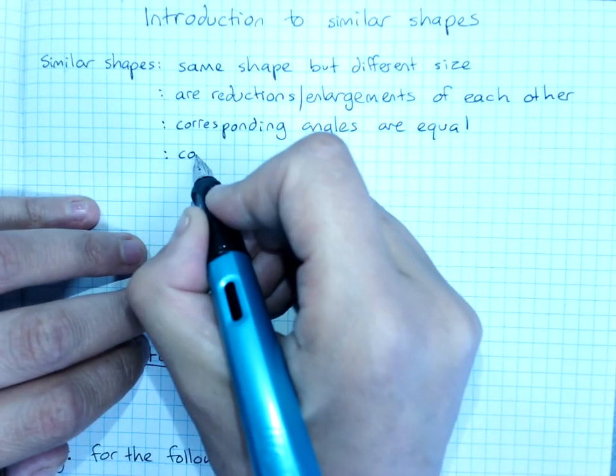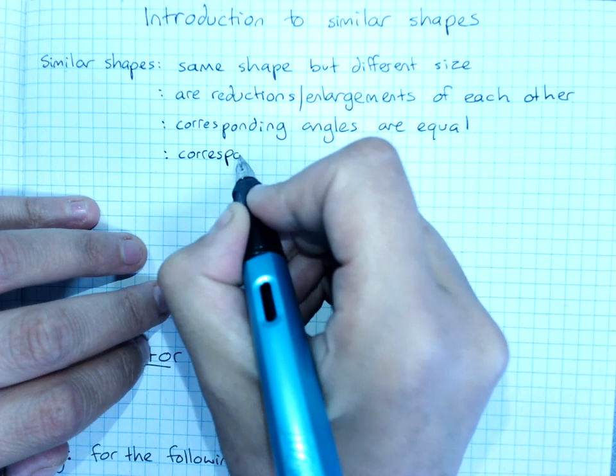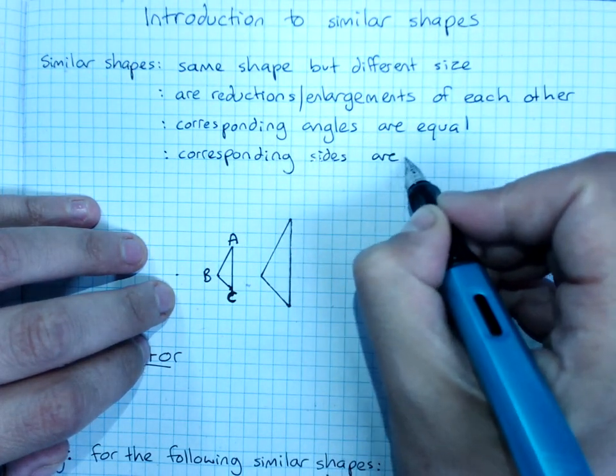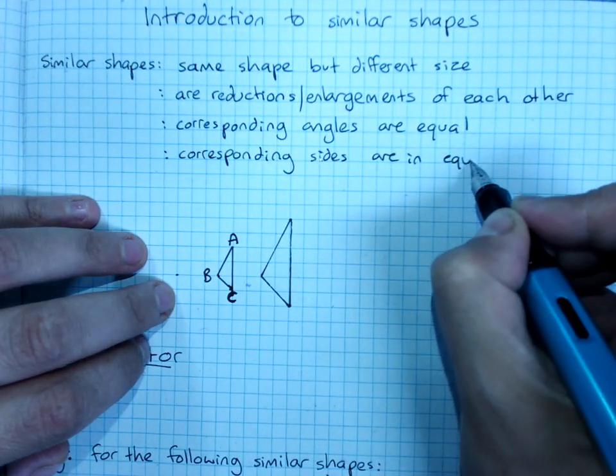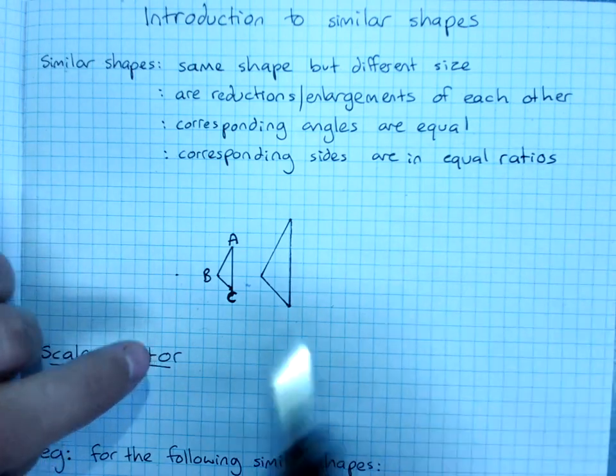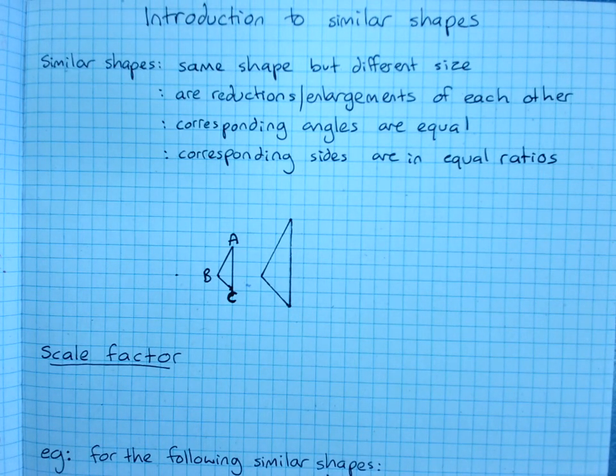And corresponding sides are in equal ratios. We'll talk about what both of those mean, but that is the characteristics of similar shapes.